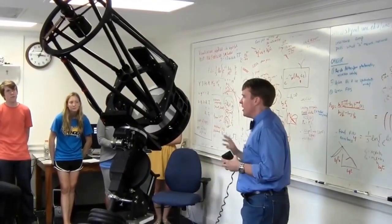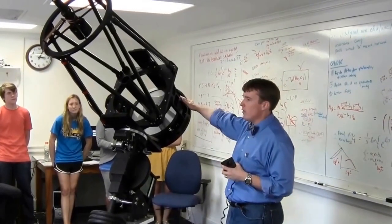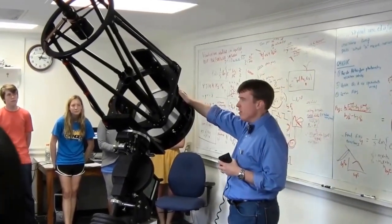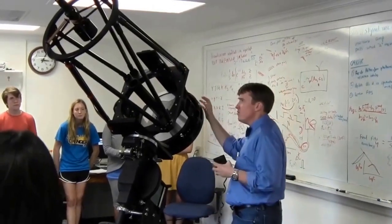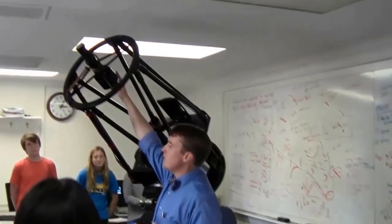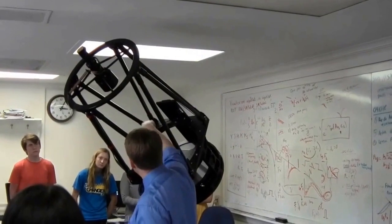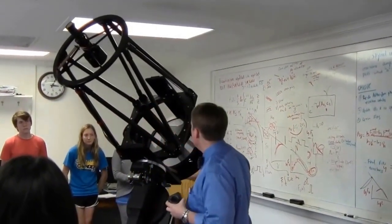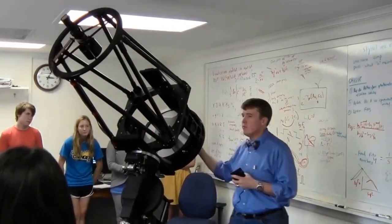The primary mirror is down here. Light comes from the sky, bounces off this mirror, bounces back up to a secondary mirror that's right here, and then it bounces down through this tube. This tube goes through the center of the mirror - the mirror's shaped like a donut; there's a hole in the middle.